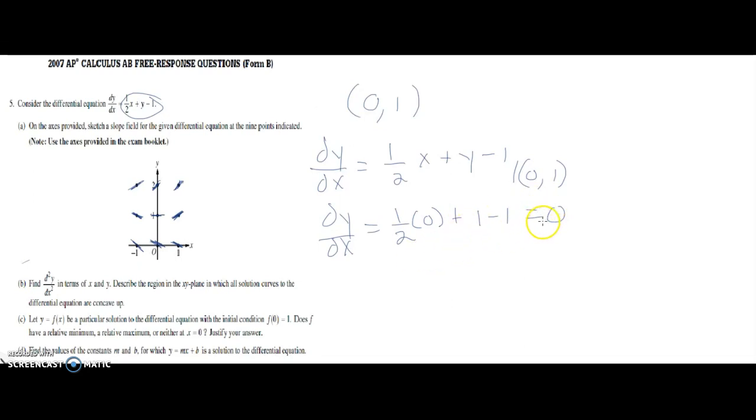So now the question is, is this a min or max? Don't know, so now we're going to plug in the second derivative, which is what we found in the last equation, which equaled one-half x plus y minus one-half. When we plug in zero, one, we're basically testing the concavity.